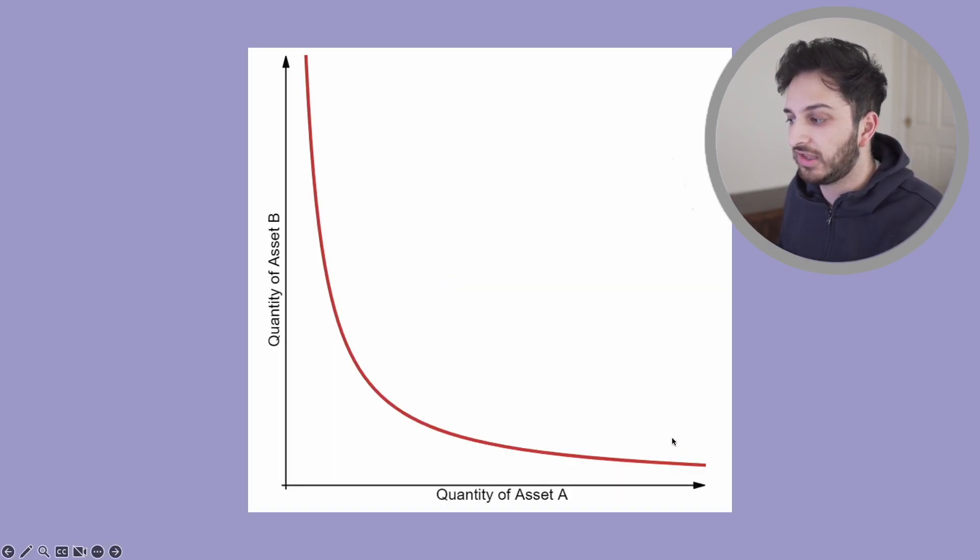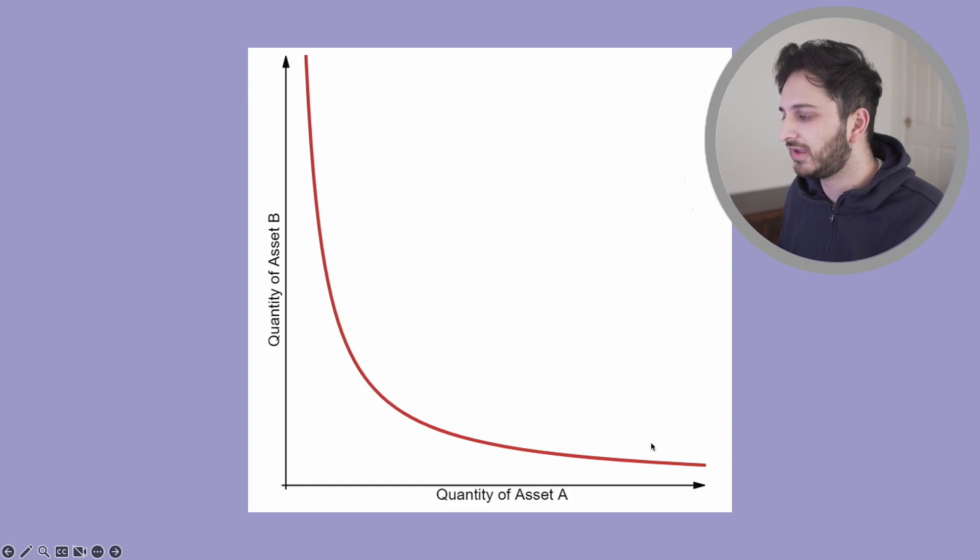Now, this is the curve, an AMM curve for those of you wondering. It's kind of the usual curve, Uniswap V2 kind of thing. Anyway,